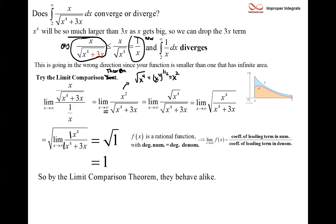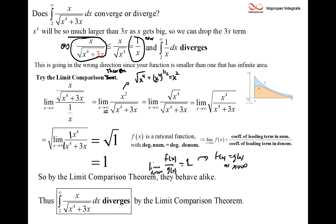The answer is the square root of 1, which is 1. Dividing our two functions gives a limit of 1, which means they are essentially the same function — indistinguishable as x goes to infinity. f(x) is essentially equal to g(x) as x goes to infinity; the 3x underneath is negligible. Therefore, since our integral of g(x) = 1/x diverged, this original integral also diverges — they behave alike. That's one example of the limit comparison theorem.